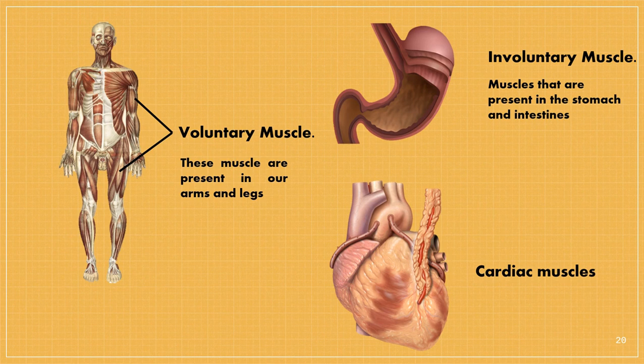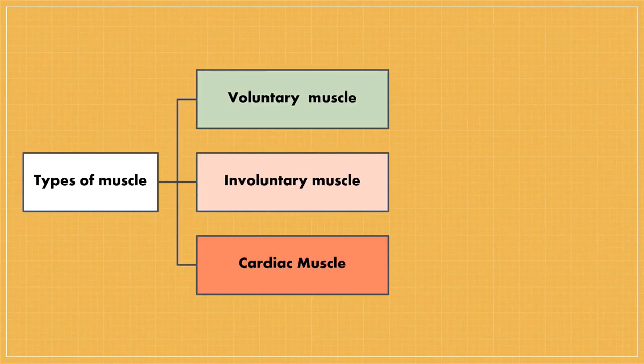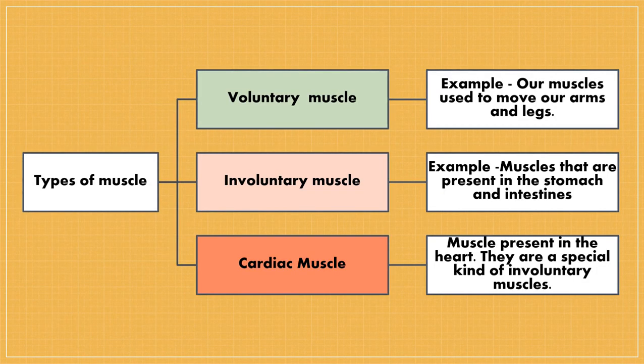Voluntary muscles are muscles which are under our control — for example, the muscles used to move our arms or legs. Involuntary muscles are muscles which are not under our control — for example, the muscles present in the stomach, intestine, and so on. Cardiac muscles are muscles present in the heart, and they are a special kind of involuntary muscle.